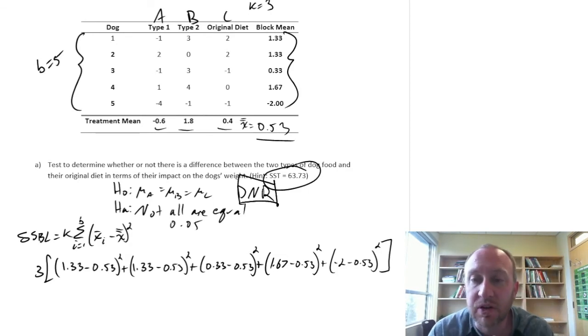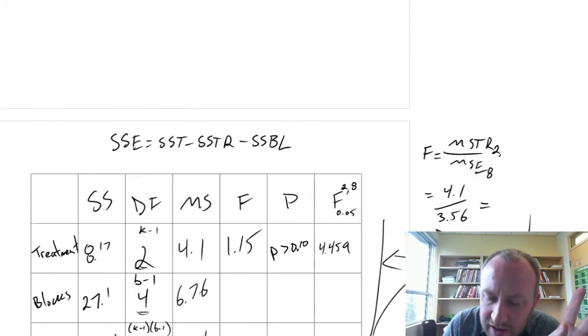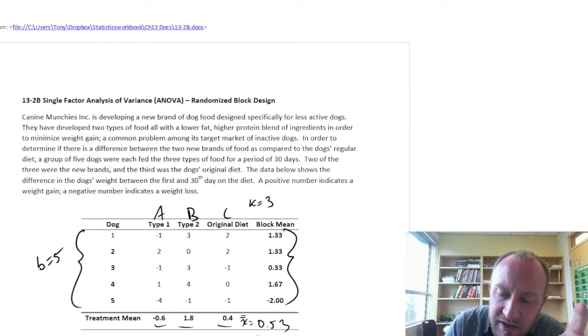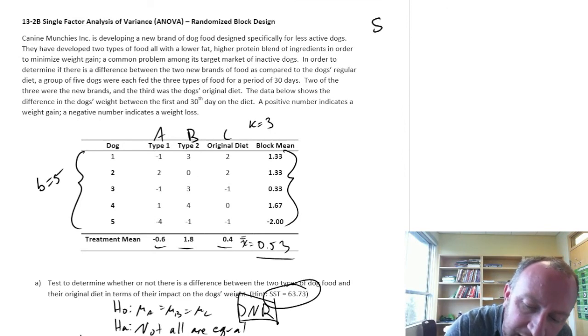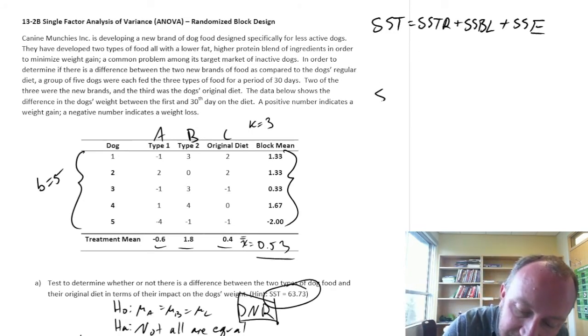Okay, good. That's all there is to the test. Now I just want to touch on one little thing quickly. How's my time? 15 minutes. One little thing quickly here. Related to what I was saying at the beginning of this video. Where we had SST in this randomized block design is SSTR plus SSBL plus SSE.